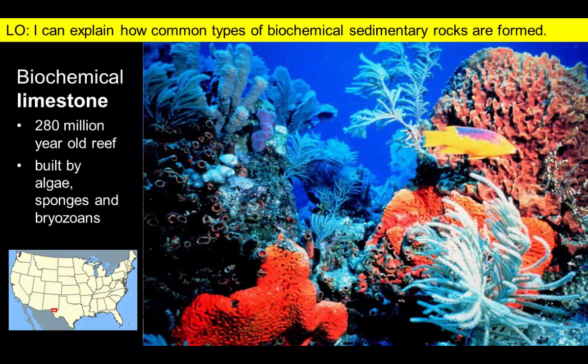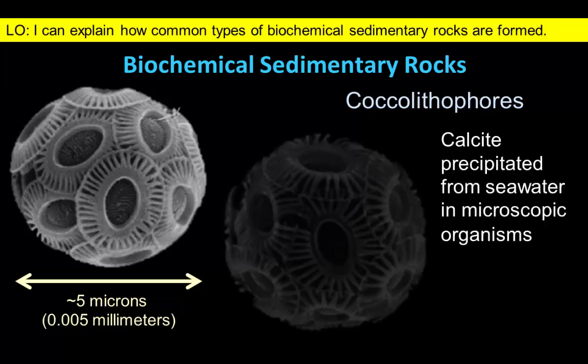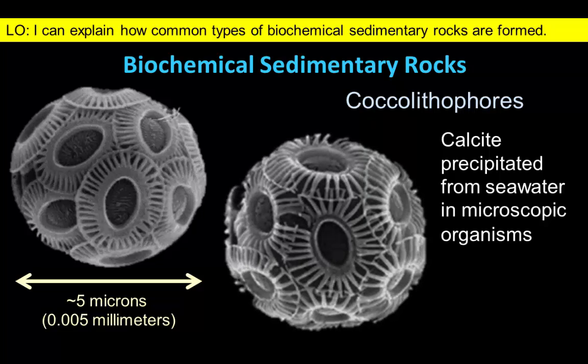Much like the corals of today. Even single-celled marine plants like these coccolithophores can cause precipitation. These tiny plankton-like organisms are made up of plates of the mineral calcite.